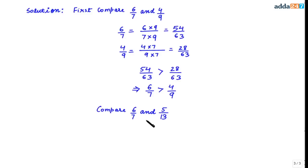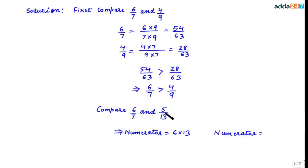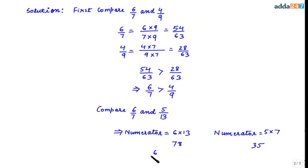Next, we will compare 6/7 and 5/13. Directly cross-multiplying: the numerator for 6/7 becomes 6 × 13 = 78, and for 5/13 it becomes 5 × 7 = 35. Since 78 is definitely greater than 35, that means 6/7 is greater than 5/13.